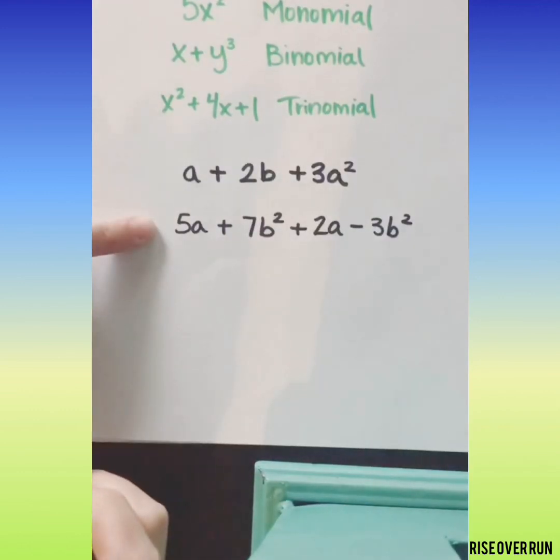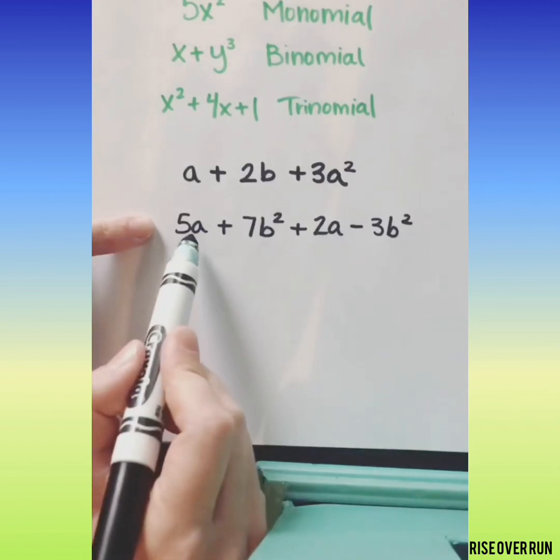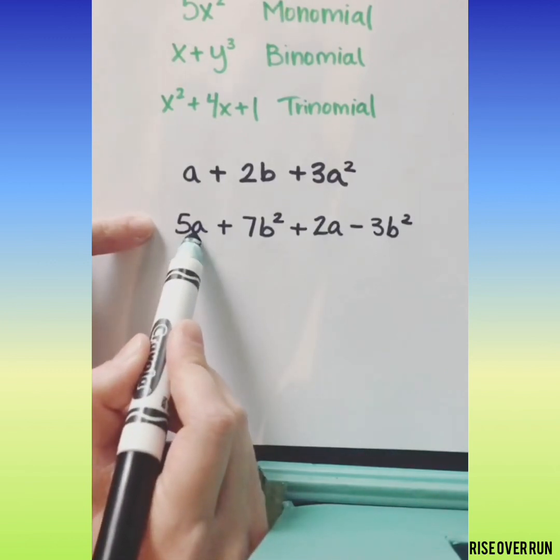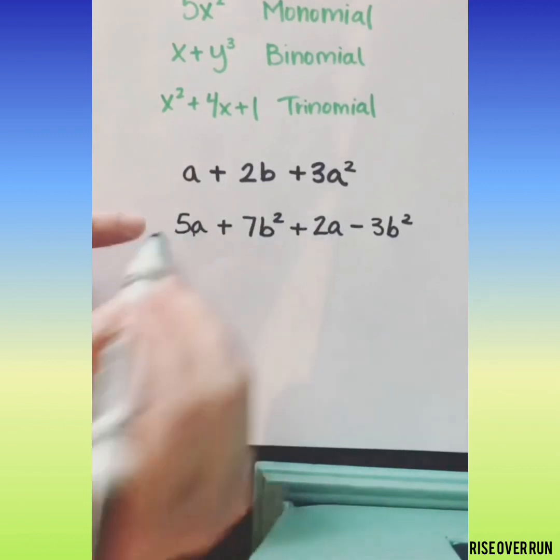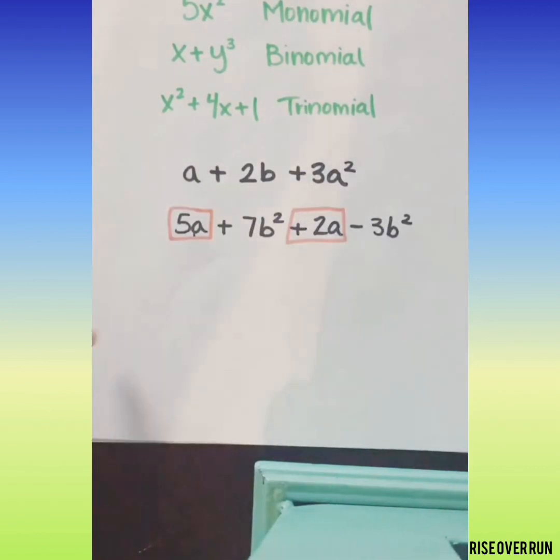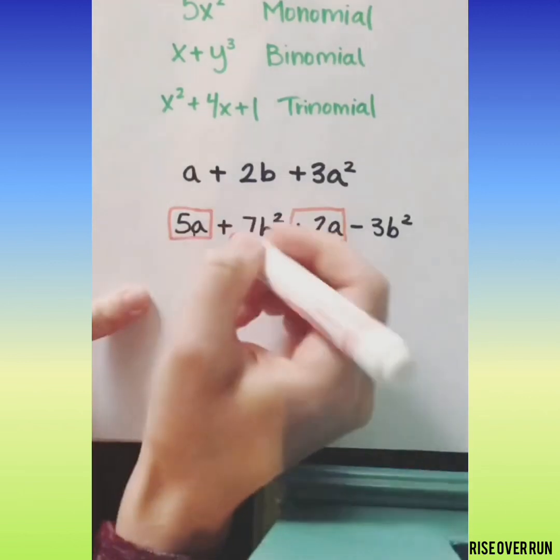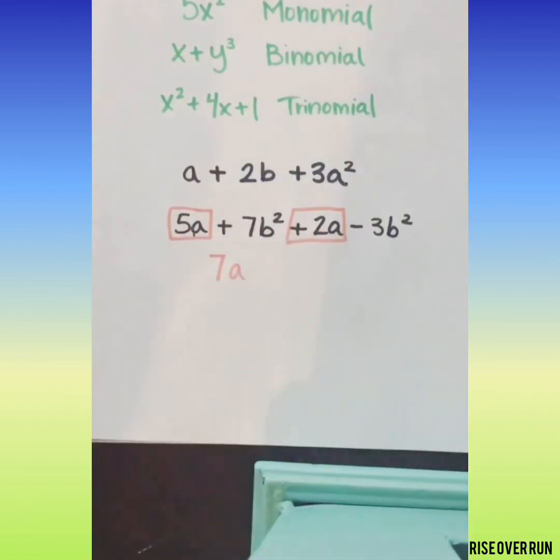Let's look at this polynomial and see if we can simplify it. First, we're looking for like terms. Like terms have the same variable and the same exponent. So we have 5a and 2a. We can add these. 5a and 2a makes 7a.